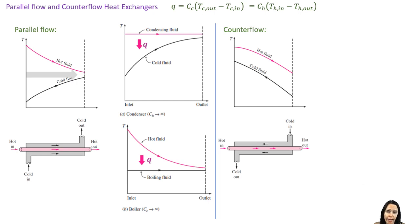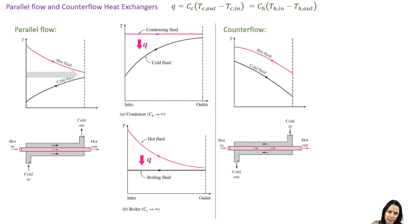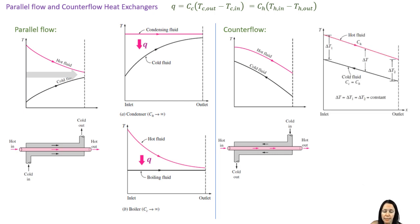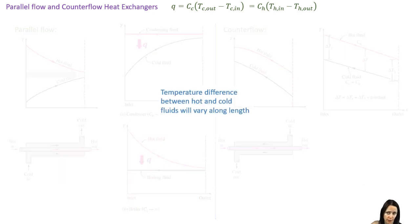For a counterflow heat exchanger, the hot and cold streams enter at opposite ends. The highest temperature of the hot stream is on the left at its inlet, and the lowest temperature of the cold stream is on the right at its inlet. The temperature difference between the two streams is never as large as it is for parallel flow. The temperature gradient is comparable at every point along the length, and the temperatures are only parallel — meaning constant temperature difference — if the heat capacity rates are equal. With the exception of that special case, the temperature difference varies along the length.